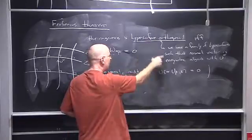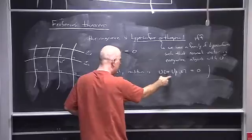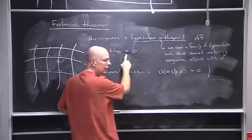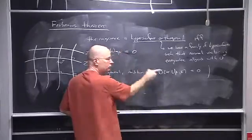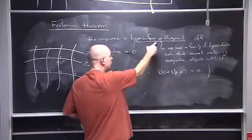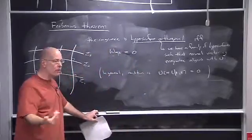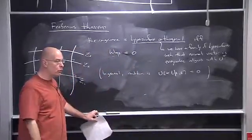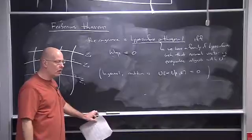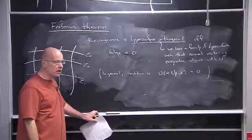So if you have hypersurface orthogonality, you get the general Frobenius condition. And for geodesics, if you have that general condition, you have vanishing rotation. The converse — going from vanishing rotation back to hypersurface orthogonality — is much harder, and for that you have to go to differential geometry books; I think Wald has a proof of this in one of the appendices.